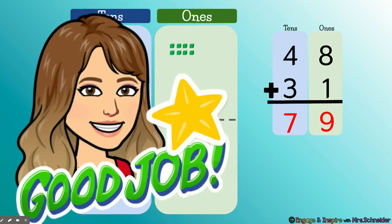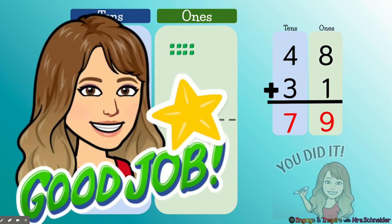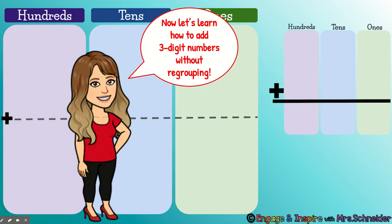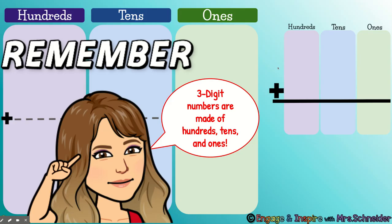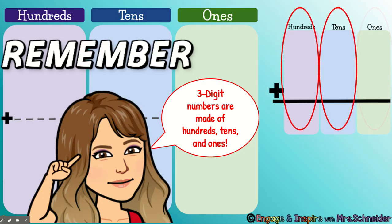So 48 plus 31 equals 79. Good job, you did it! Now let's learn how to add three-digit numbers without regrouping. Let's remember: three-digit numbers are made of hundreds, tens, and ones.